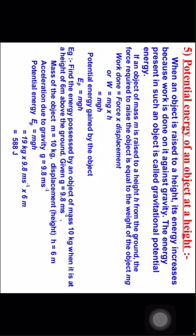Example: find the energy possessed by an object of mass 10 kg when it is at a height of 6 meters above the ground. Given g is equal to 9.8 meters per second squared. Mass of the object m is equal to 10 kg. Displacement h is equal to 6 meters. Acceleration due to gravity g is equal to 9.8 meters per second squared. Potential energy ep is equal to mgh. Substituting the values in the equation, you will get the answer 588 joules.